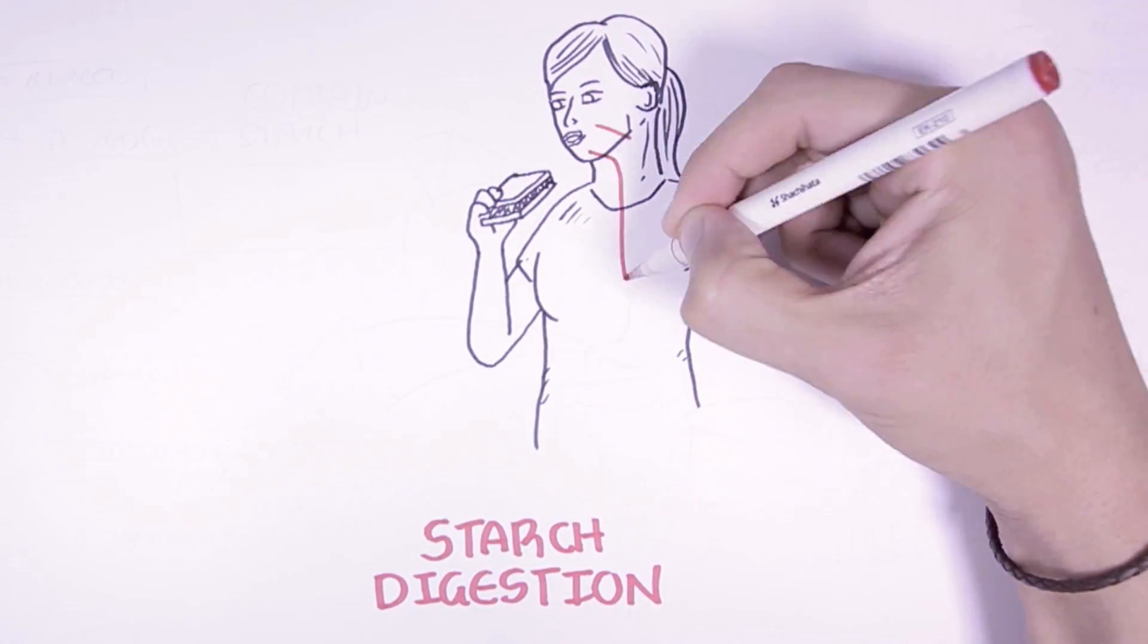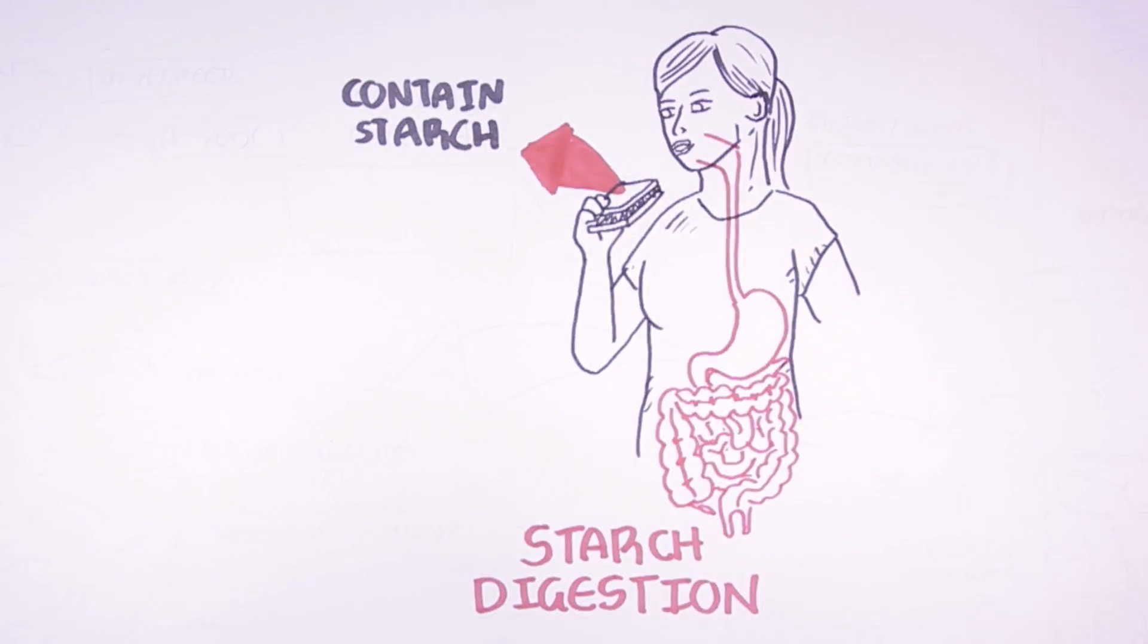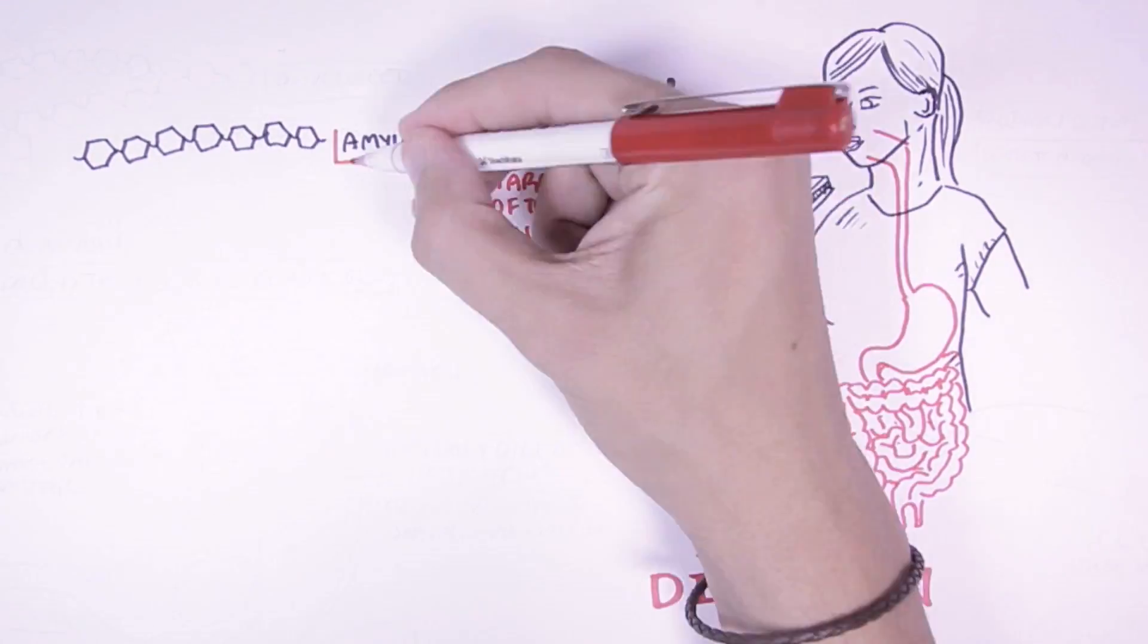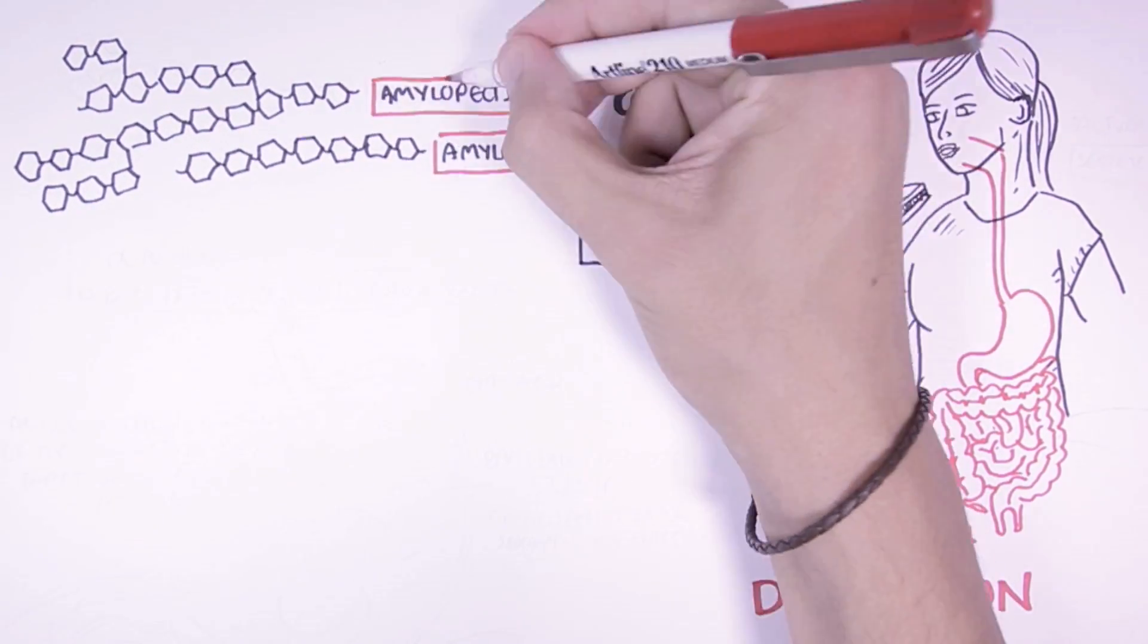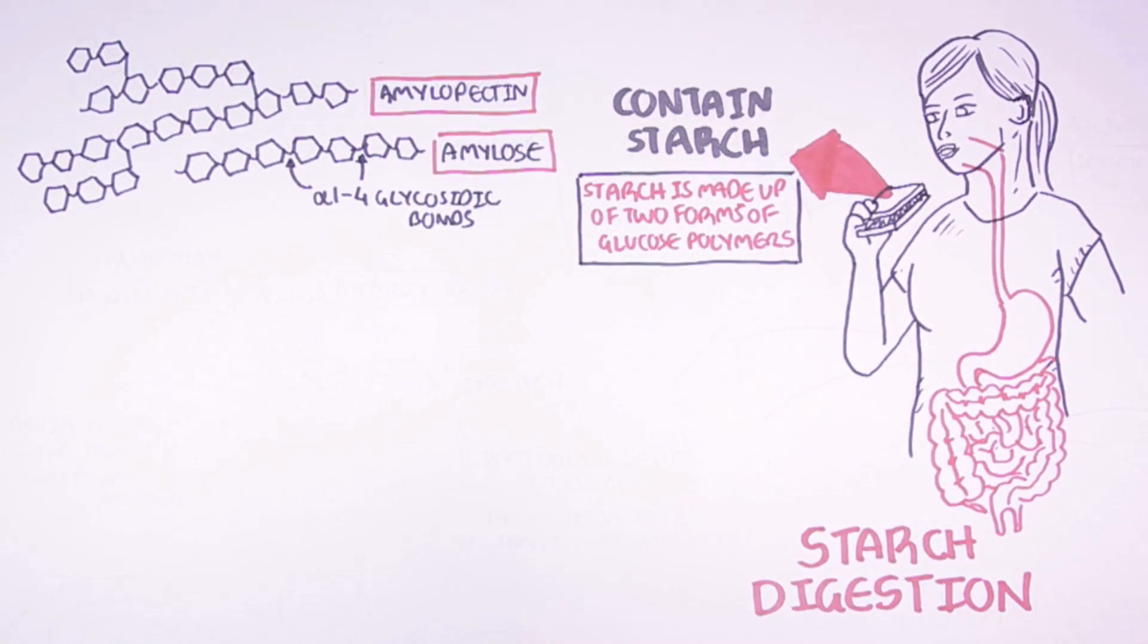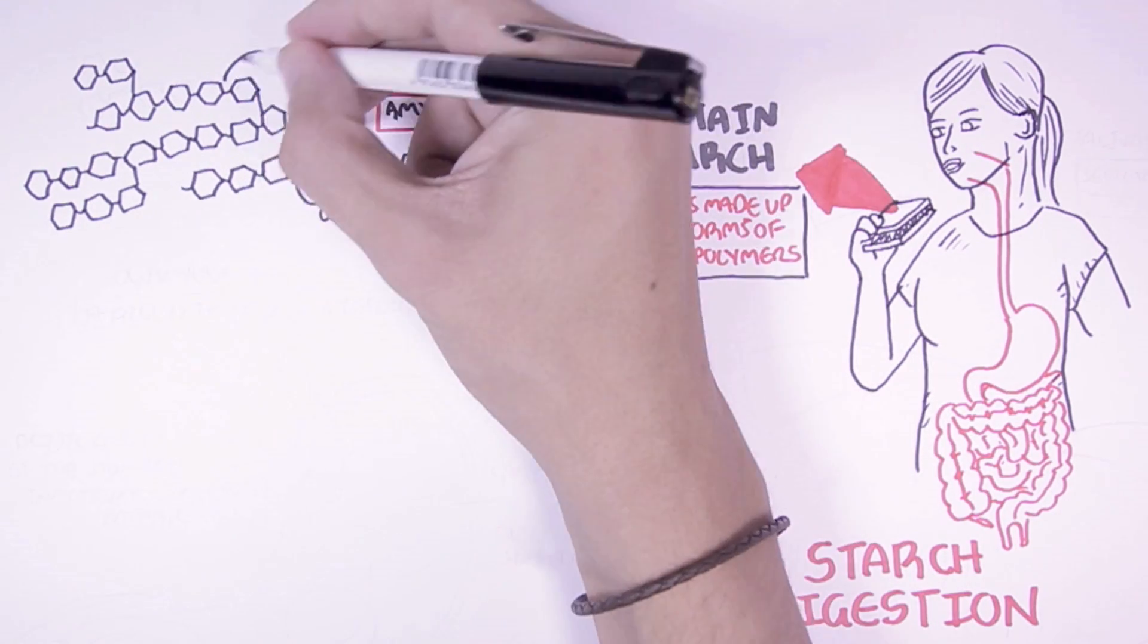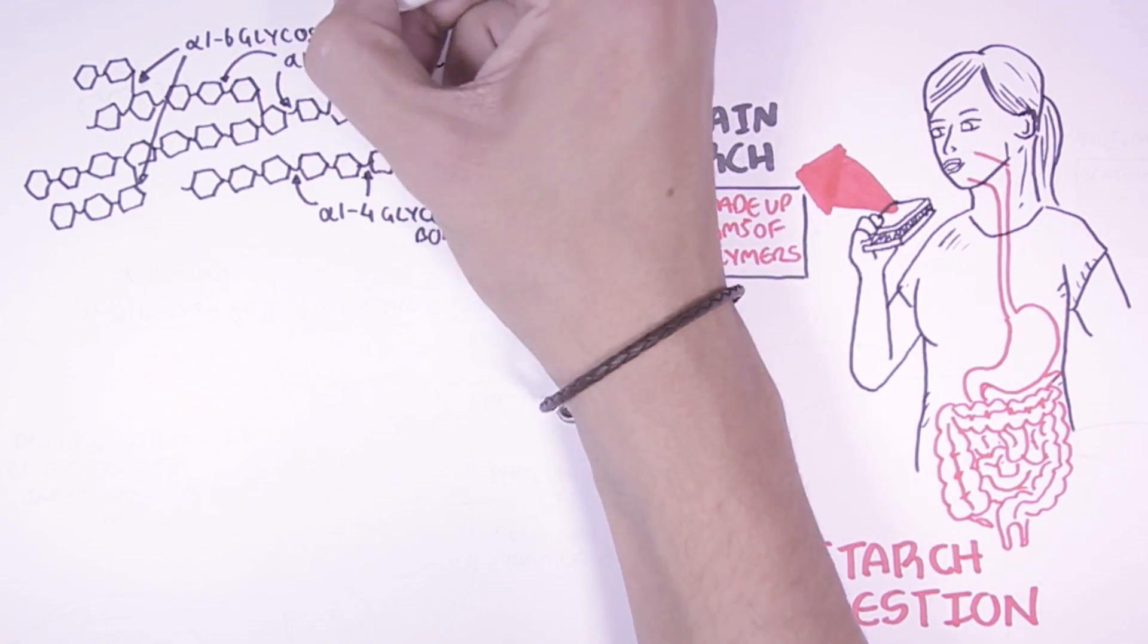So we begin here with a human eating a sandwich. The bread contains starch. Starch is made up of two forms of glucose polymers: the linear amylose and the branched amylopectin. Amylose is a linear chain of glucose linked together by alpha-1,2,4 glycosidic bonds. Amylopectin are linear chains of glucose with branch points creating a tree-like figure. In amylopectin the glucose molecules are also linked by alpha-1,2,4 glycosidic bonds, but the branch points are linked by alpha-1,2,6 glycosidic bonds.